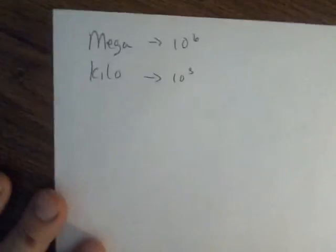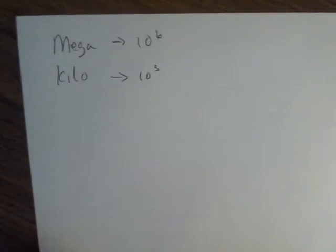Because engineering notation uses prefixes like mega. Mega means a million, 10 to the 6th. And I'm going to go over this next time. There's lots of them. Kilo, like kilometer, kilowatts, things like that. That's 10 to the 3rd. And like I said, there's a whole list of them and I'll go over them in your next example.